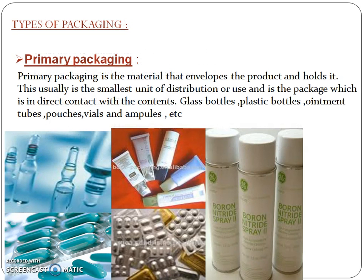Regarding types of packaging: primary packaging is the material which envelops the product and holds it. It is usually the smallest unit of distribution and use, and is the package in direct contact with the content. Examples include glass bottles, plastic bottles, ointment tubes, pouches, vials, and ampoules.